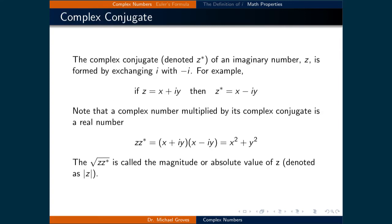A very important quantity involving complex numbers is called the complex conjugate, and is denoted as z star. The complex conjugate of an imaginary number z is formed by exchanging all instances of i with negative i. For example, if a complex number z is equal to x plus i times y, then its complex conjugate z star is equal to x minus i times y. A property of the complex conjugate of a complex number is that when a complex number is multiplied by its complex conjugate, the result is a real number.